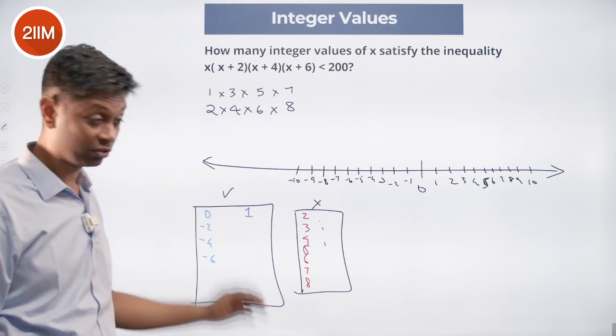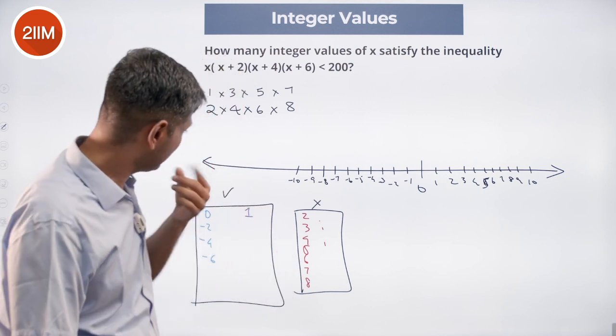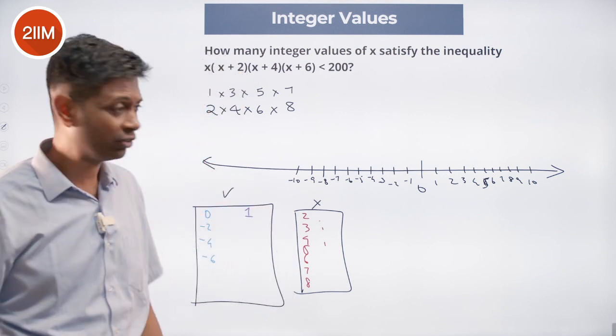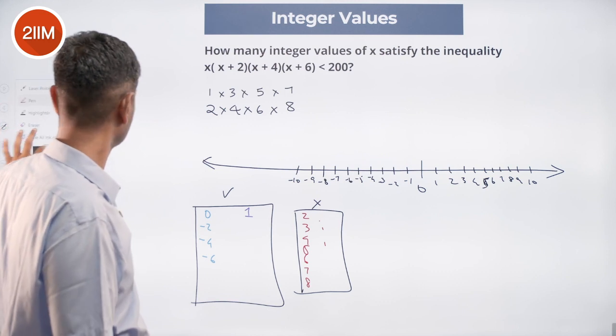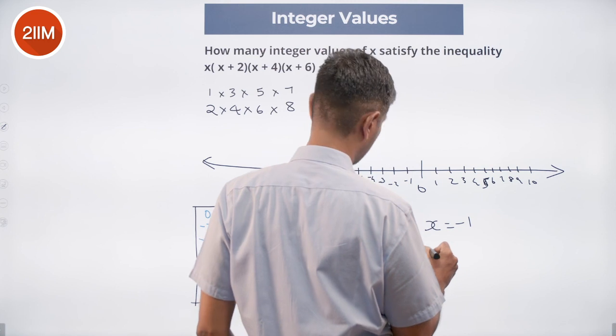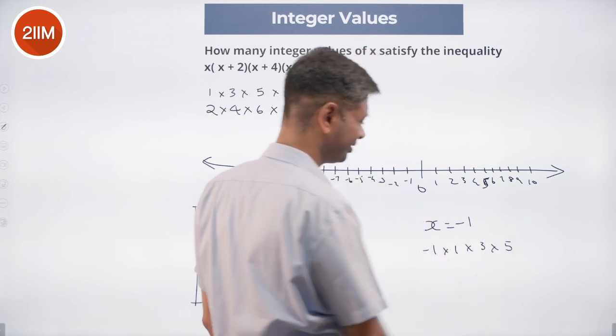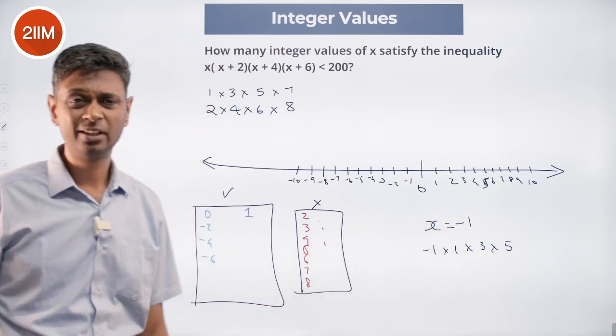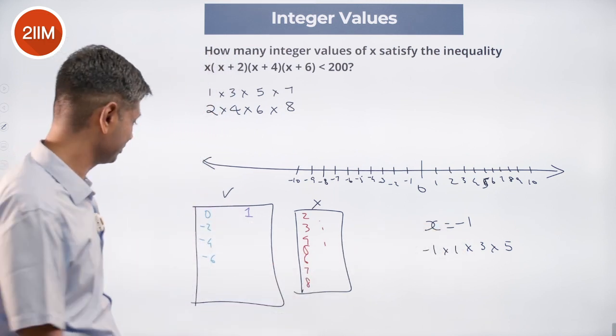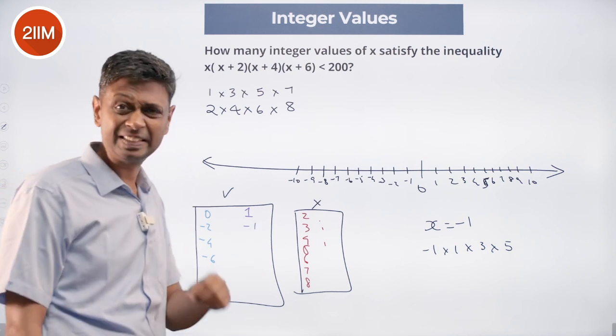0, minus 2, minus 4, minus 6 works. And I am thinking it was so interesting. I am thinking that if I go this way maybe I will be able to find something. We put x equal to minus 1. x equal to minus 1, think about minus 1 into 1 into 3 into 5. Nice. Number is negative. Minus 1 will definitely work. Minus 1 is in the bag.